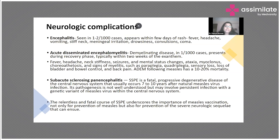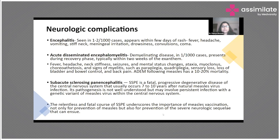Neurological complications are the most dreaded in measles. Although not extremely common, encephalitis occurs in almost 1 to 2 per thousand cases. Children can also have acute disseminated encephalomyelitis or, more seriously, subacute sclerosing panencephalitis. Encephalitis typically happens within a few days of the rash — if the child develops headache, vomiting, neck stiffness, or meningeal irritation, neurological involvement must be suspected immediately.